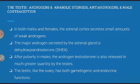In males as well as in females, the adrenal cortex secretes a small amount of androgens. The major androgen secreted by the adrenal gland is dehydroepiandrosterone. At puberty, in males, the androgen testosterone is also released in much greater quantity by the testis.